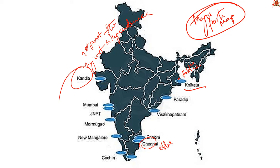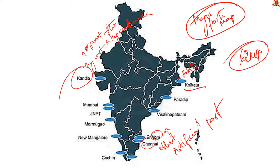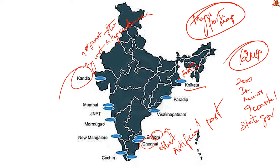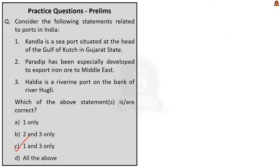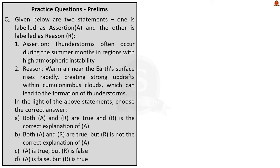Chennai is the oldest artificial harbour in India. Ennur was recently developed to reduce load on the Chennai port. In total, there are 12 major ports in India, and apart from these, more than 200 intermediate and minor ports operate in nine coastal states, administered by the respective state government ministries. The correct answer for this question is Option C — 1 and 3 only.